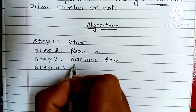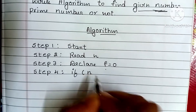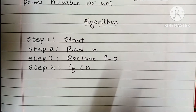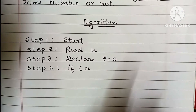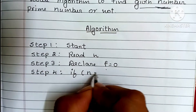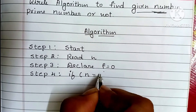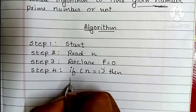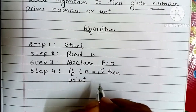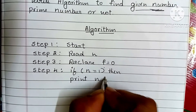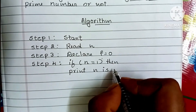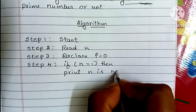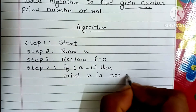Step 4: we know that 1 is not a prime number because it is divisible by only one number, that is 1 itself. So if N is equal to 1, then we have to print N is not a prime number.